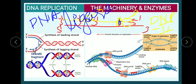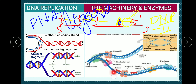On the lagging strand, a continuous stretch of polynucleotide chain is eventually formed, complementary to the template running in the 3' to 5' direction. The discontinuous synthesis on the lagging strand produces short stretches of DNA fragments. These short stretches of DNA formed on the lagging strand are called Okazaki fragments.